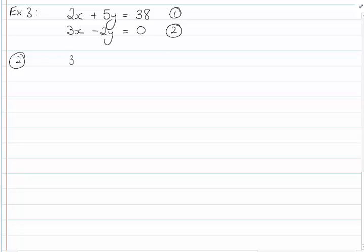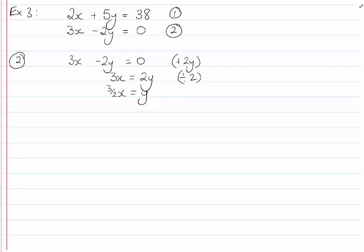which is 3x minus 2y equals 0. So I'm going to add 2y to both sides to give me 3x equals 2y. And then I'm going to divide by 2, which will give me 3 over 2x equals y. Now I could have divided by 3. And that would have given me my x by itself. I could have then substituted my x back in. And it will work exactly the same.